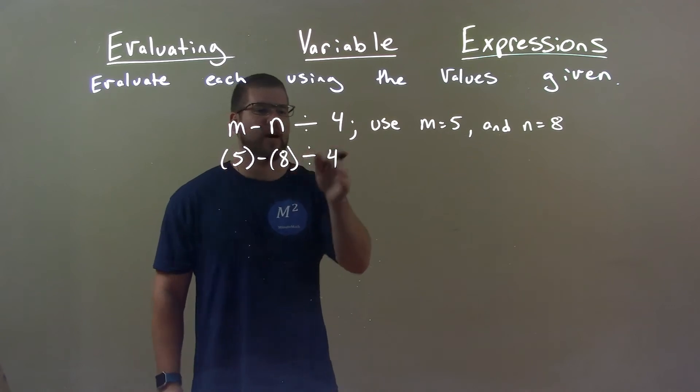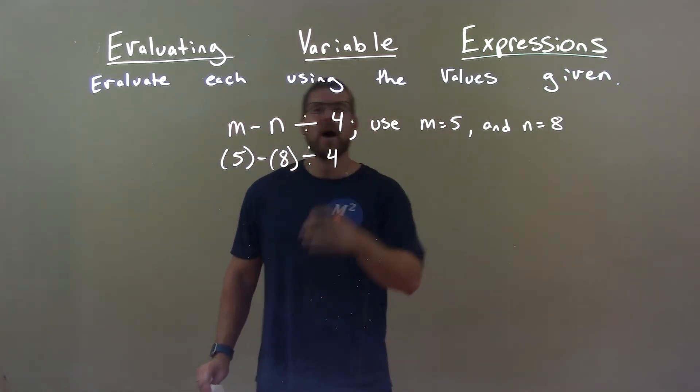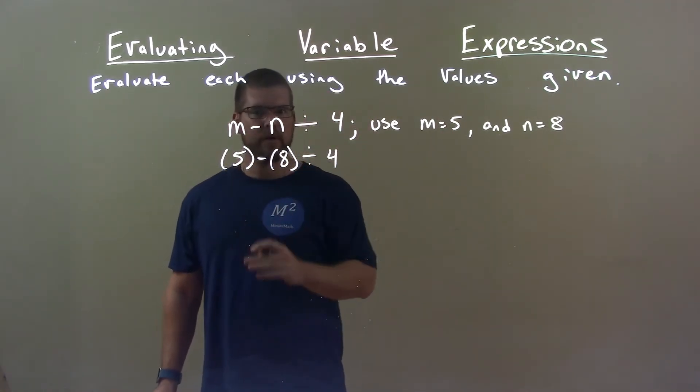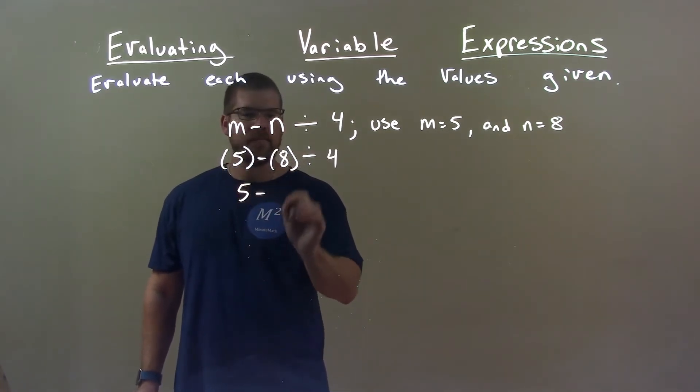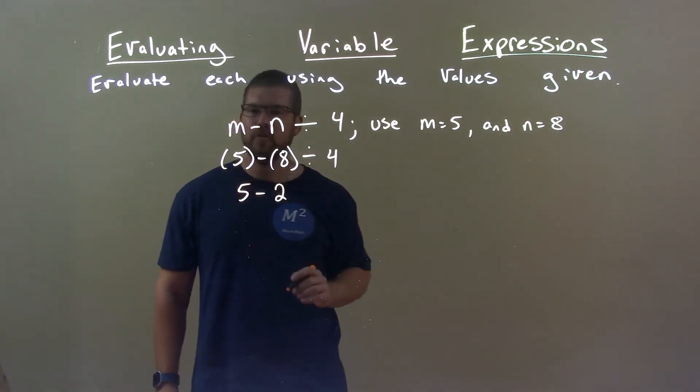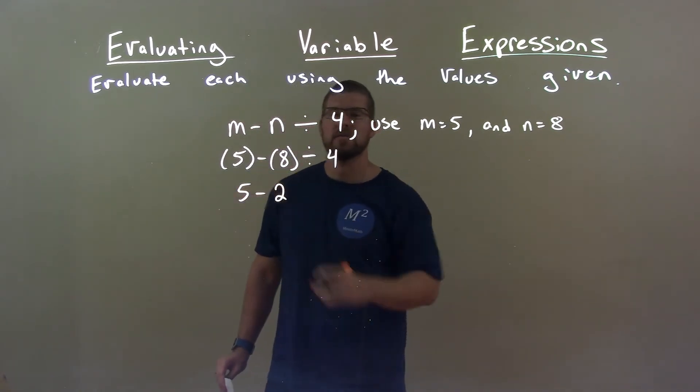So now I have 5 minus 8 divided by 4. Order of operations would say we have to do division first, 8 divided by 4. So 5 stays here, 8 divided by 4 is 2. So now we have 5 minus 2.